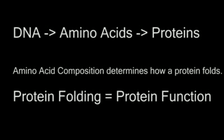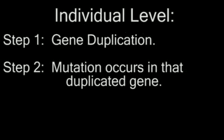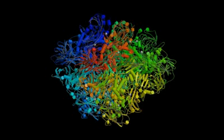Gene duplication provides the new stretch of DNA, followed by a mutation which creates a brand new protein. This fits even the most strict, absurd definition of new information, and it's been documented several times. One famous example is nylonase — an enzyme which digests nylon.